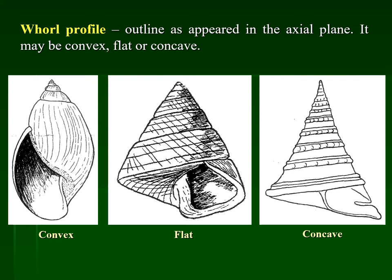If we look at gastropod shells, the outer surface or outline is defined by the plane consisting of the coiling axis. According to what the outer surface looks like, we define the whorl profile. For example, for this gastropod the outer surface is convex in nature, so the whorl profile is convex. Similarly, for the second case you can see the outer surface is more or less flat in all sides in the axial plane.